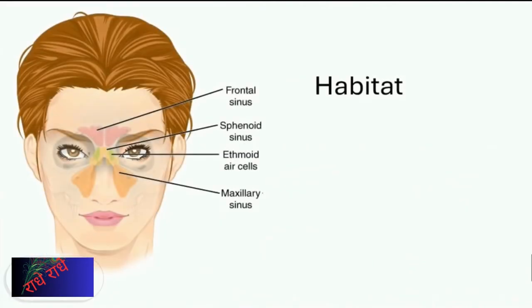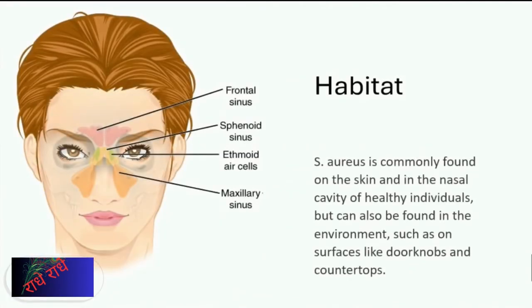Staphylococcus aureus, commonly known as staph, is a bacteria which can be found on the skin and in the nasal passages of healthy individuals. It can also be present in the environment, appearing on surfaces like doorknobs and countertops. Awareness of this bacterium is important, and good hygiene is recommended to reduce the risk of infection.